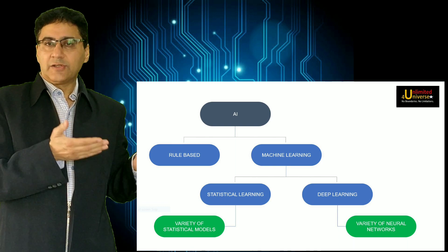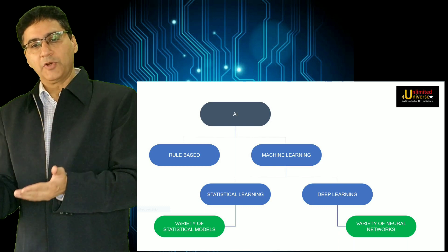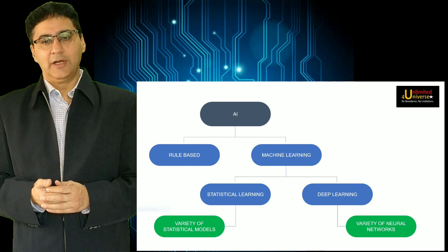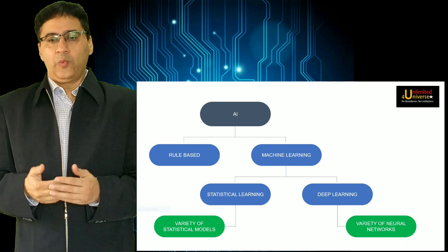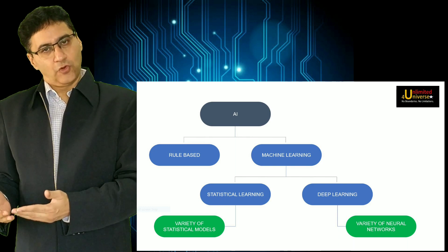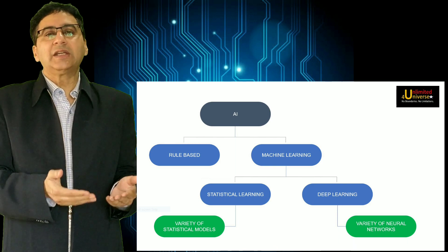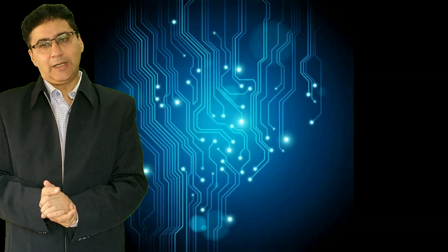Artificial intelligence as we discussed: rule based, machine learning. Within machine learning there is statistical learning and deep learning. We have got variety of neural networks below deep learning. Similarly we have got variety of statistical models below statistical learning.